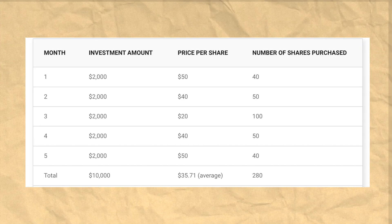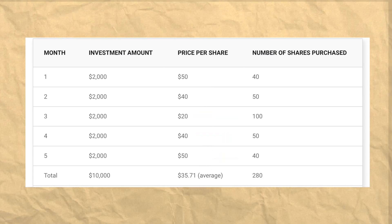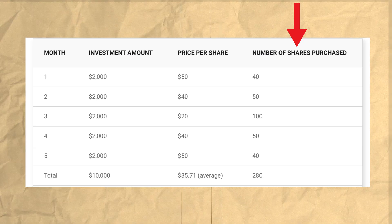Let's go over a real-life example of why dollar cost averaging is one of the best ways to invest. Let's say you have $10,000 to invest and you're deciding whether to invest it all at once or invest $2,000 for five months into a stock called X. Due to fluctuations, the stock trades at $50, $40, $20, $40, and $50 on the days you buy. Through dollar cost averaging, you'd accumulate 280 shares total, whereas investing the entire $10,000 on day one would only get you 200 shares. By dollar cost averaging, you were able to buy more shares with the same money — this is the true power of dollar cost averaging.